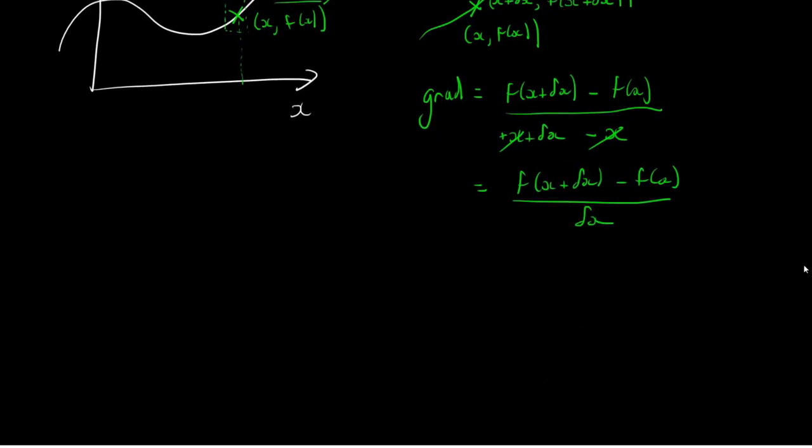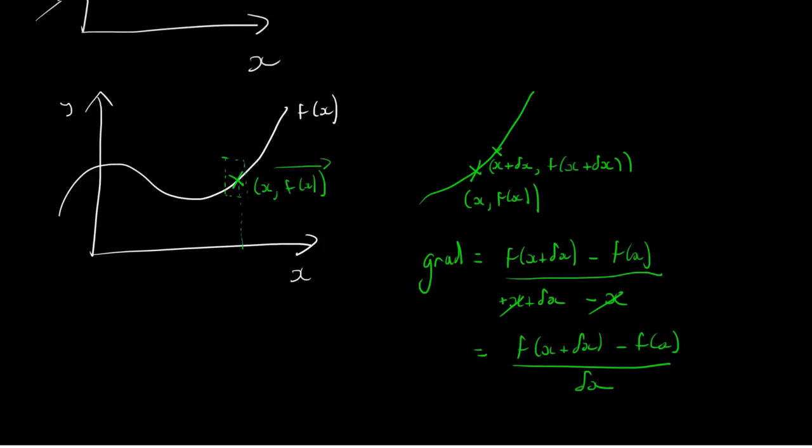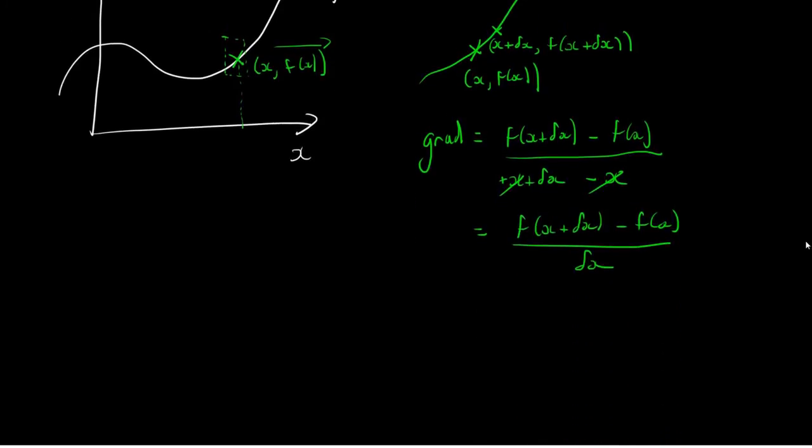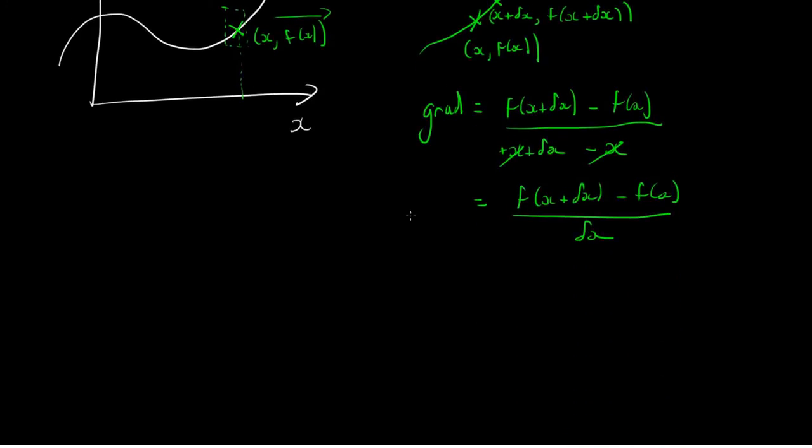But as we just said, this isn't going to be exactly the gradient of the curve at that point, unless this delta x value becomes zero. And what we do with this is we take the limit as delta x tends to zero.